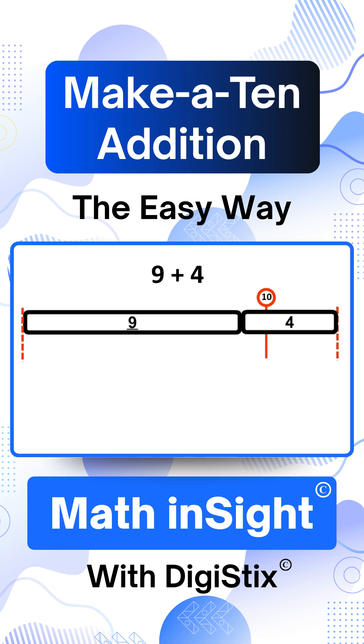To add 9 and 4, we need to find the number shown by the arrow. It's the total, which is how many we get when we put 9 and 4 together. We write the addition sentence like this.